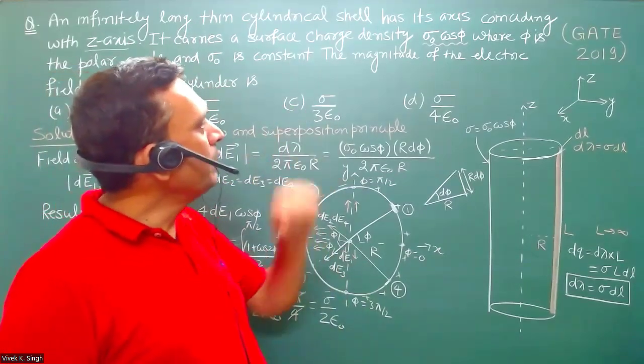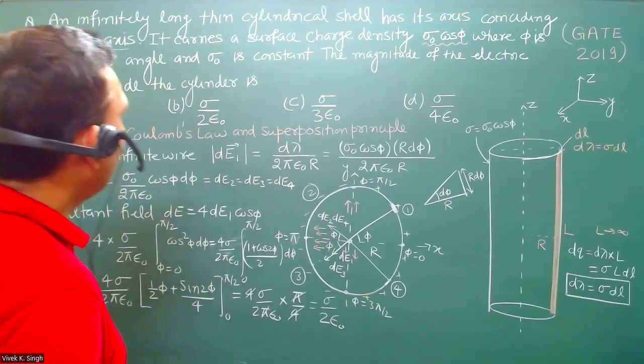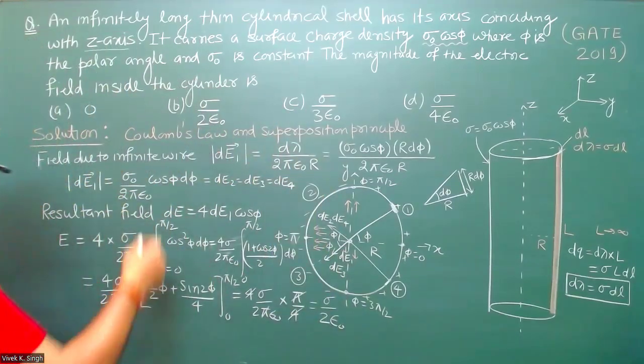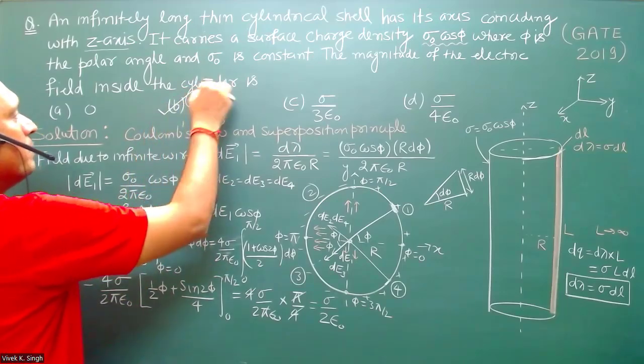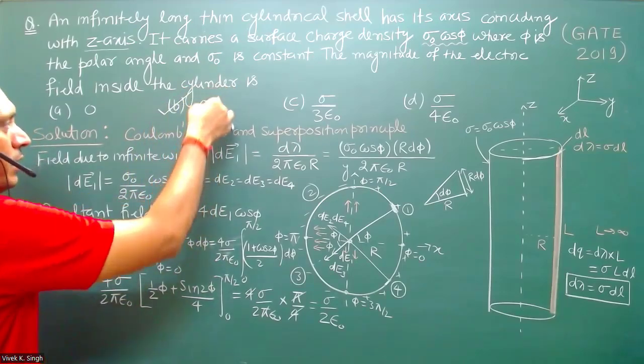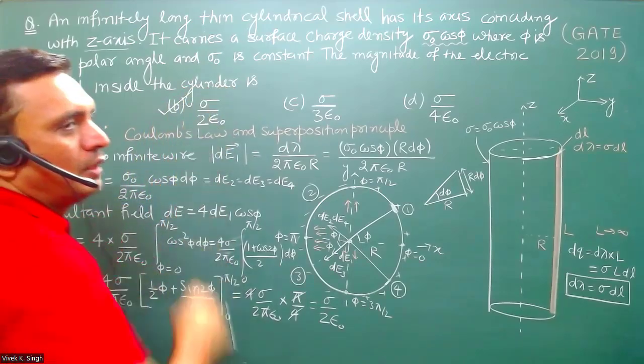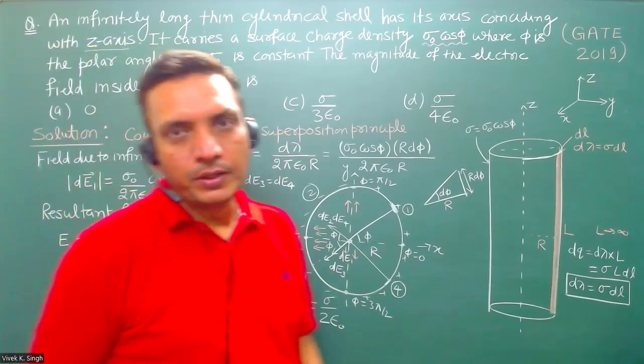From the given options, the correct answer is option B, because the magnitude of the electric field inside the cylindrical shell is σ₀ / (2ε₀).